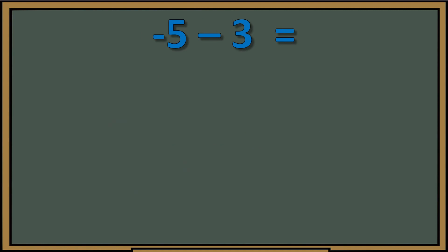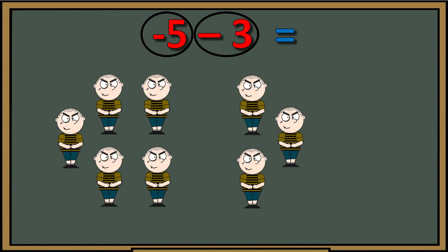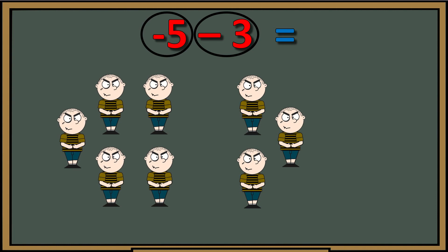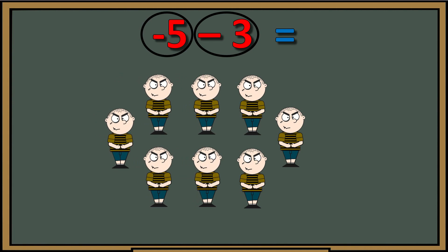We have negative five minus three. Using the strategy, we circle the negative five and we circle the negative three. We have a group of five bad guys and a group of three bad guys — they're friends, so we're not going to subtract. They combine and become a group of eight bad guys. Our answer is negative eight.